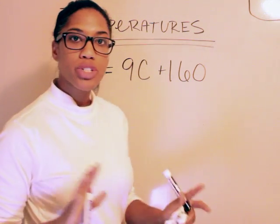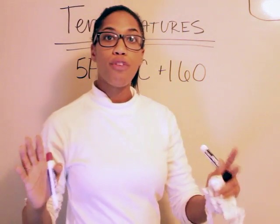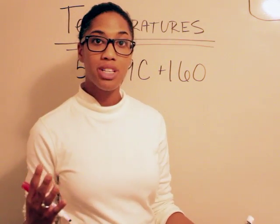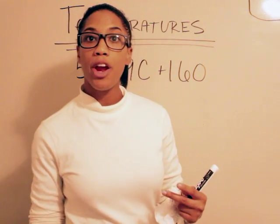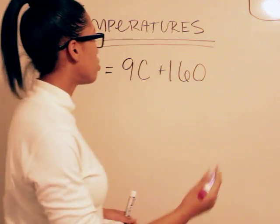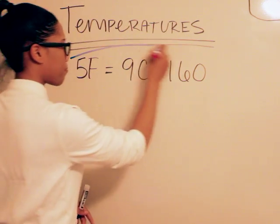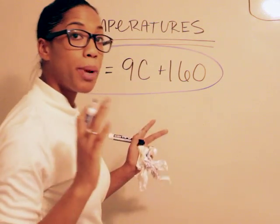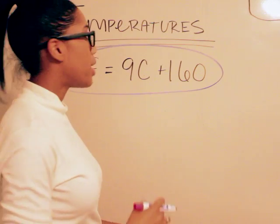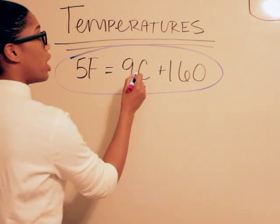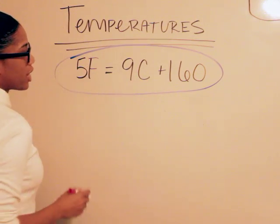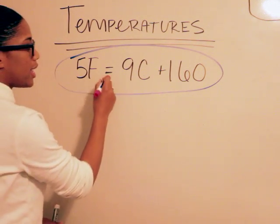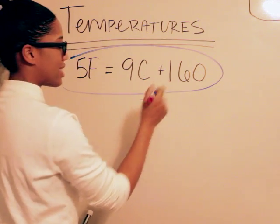Basically with dealing with temperatures and conversions, there's a certain formula that you can use. Now I know some people like to use two different formulas, one for Celsius and one for Fahrenheit, but I like to use this formula because by using this formula you can convert either way and only have to remember one formula and be able to derive both Celsius and Fahrenheit. So the formula basically is this: 5F equals 9C plus 160.